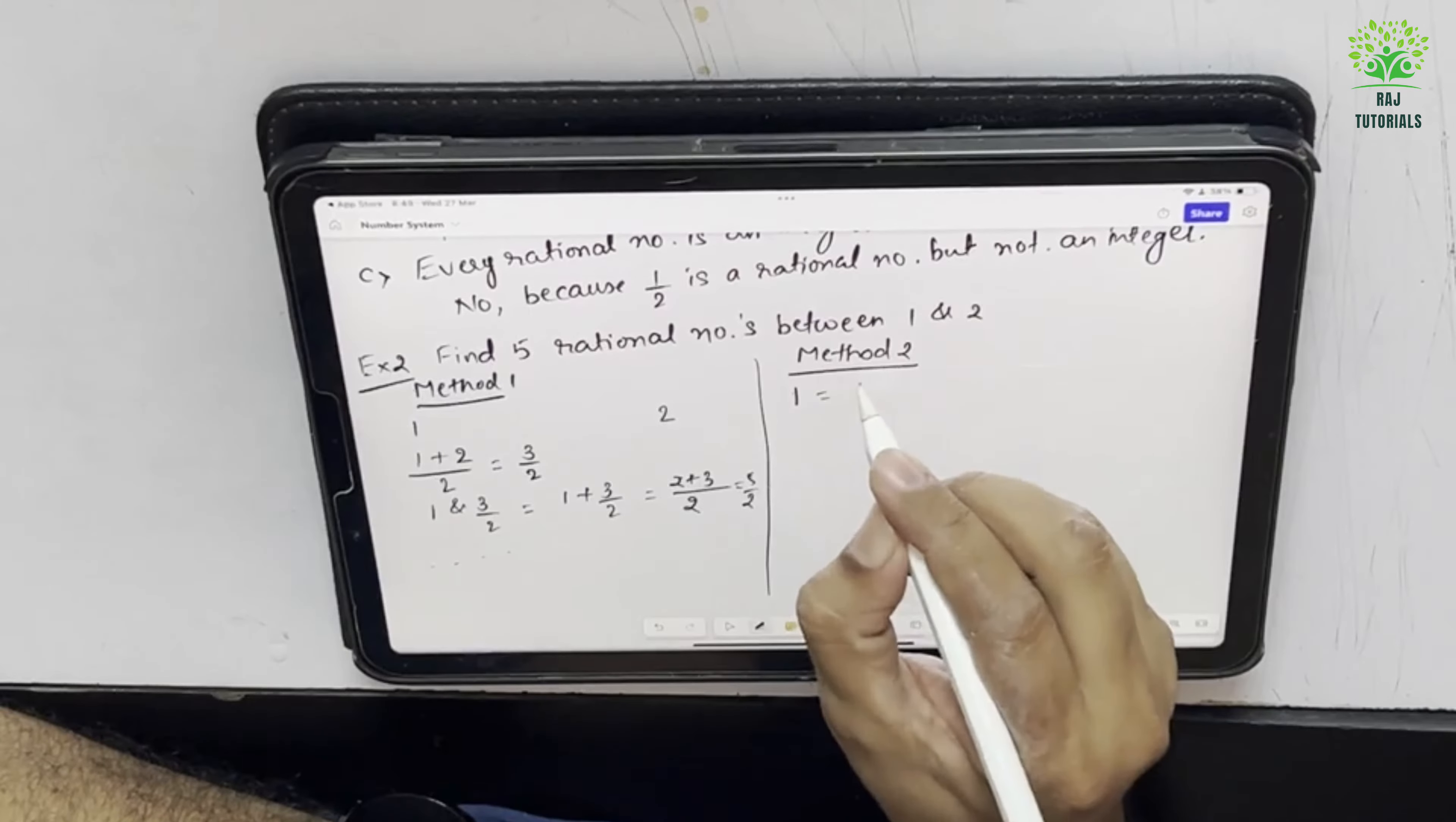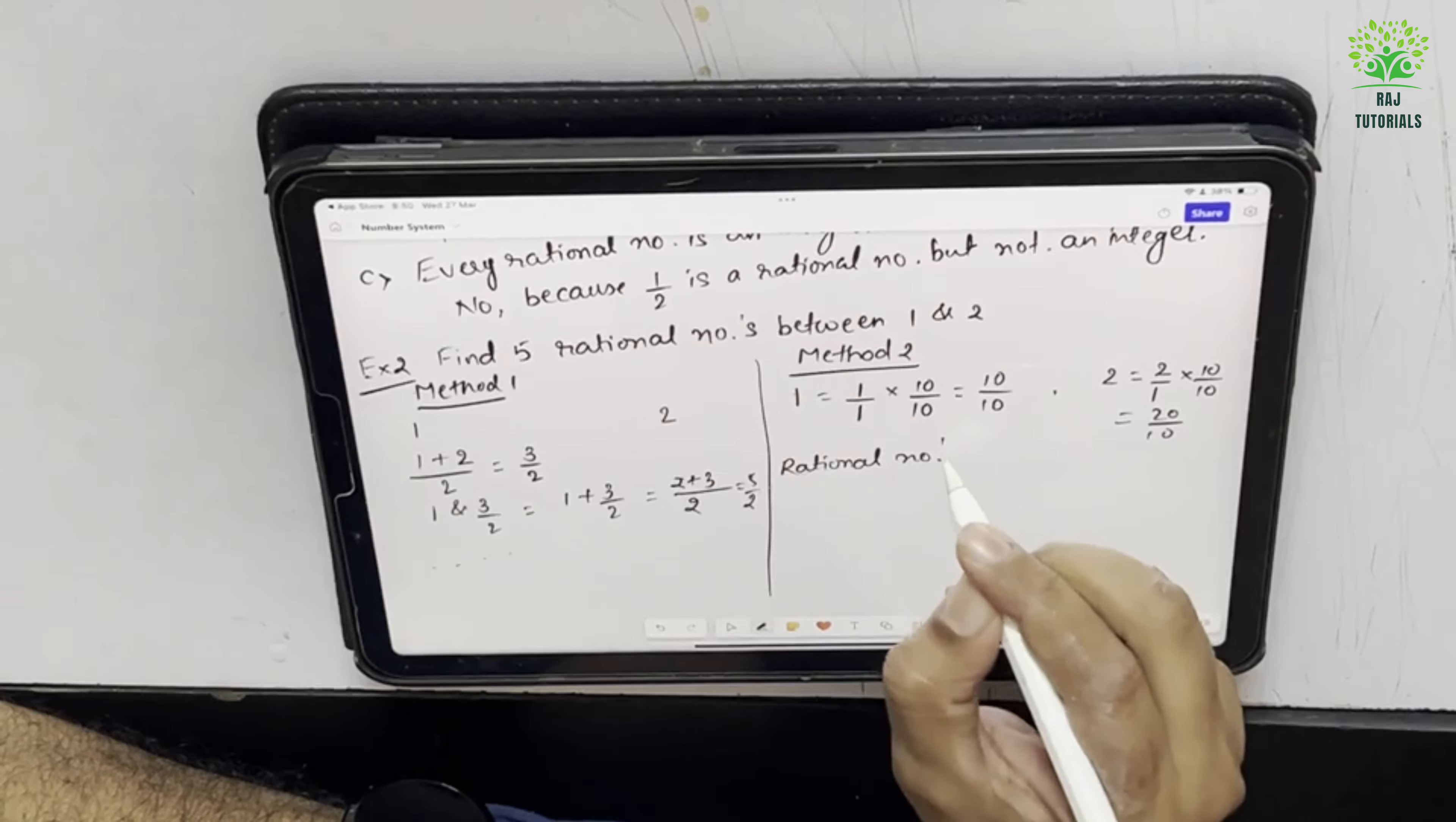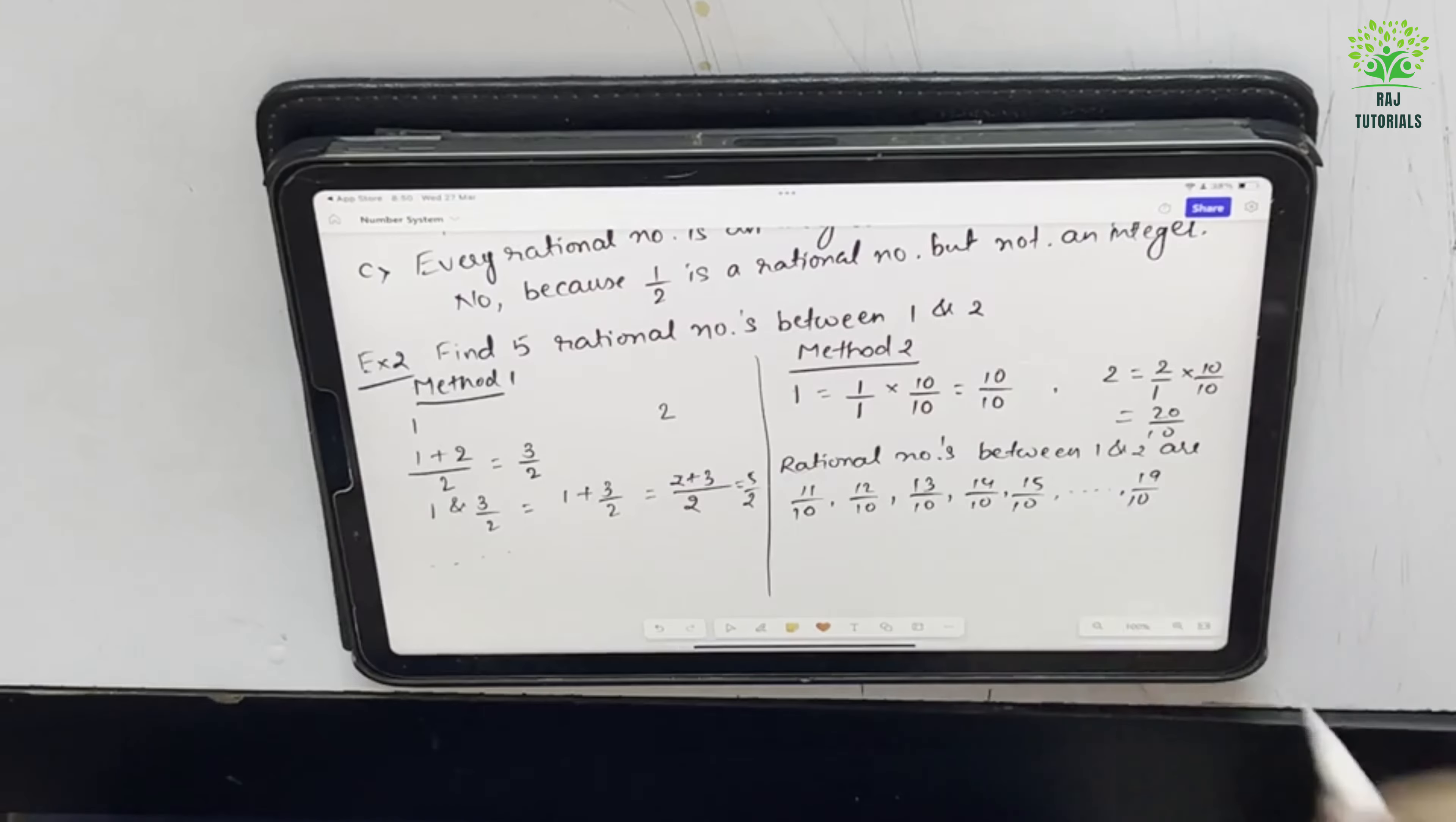The other method says, see 1 can I write it as 1 by 1 and I am multiplying both numerator and denominator with 10. So 10 by 10 and 2 I am writing as 2 upon 1 multiplied by 10 by 10. So this is 20 upon 10. Now rational numbers between 1 and 2 are, I can directly write 11 upon 10, 12 upon 10, 13 upon 10, 14 upon 10, 15 upon 10 till 19 upon 10. So I will have multiple numbers between these two numbers.